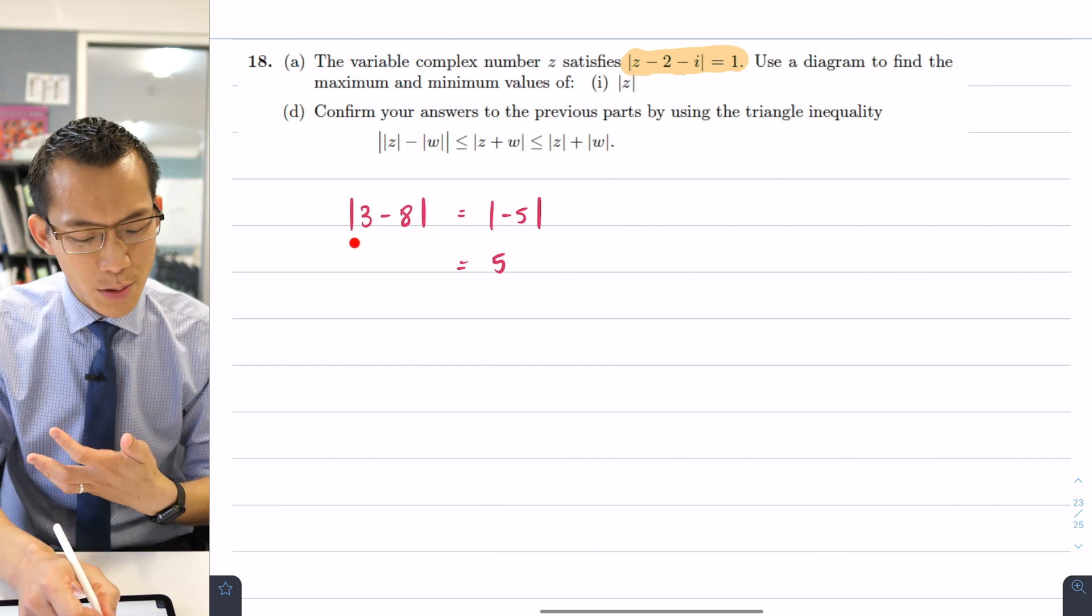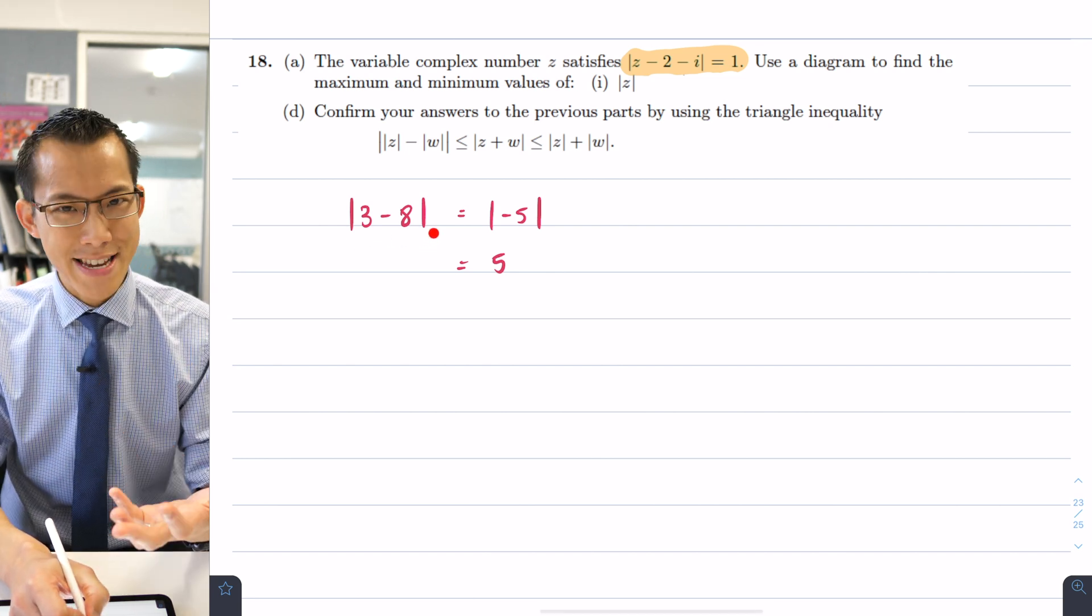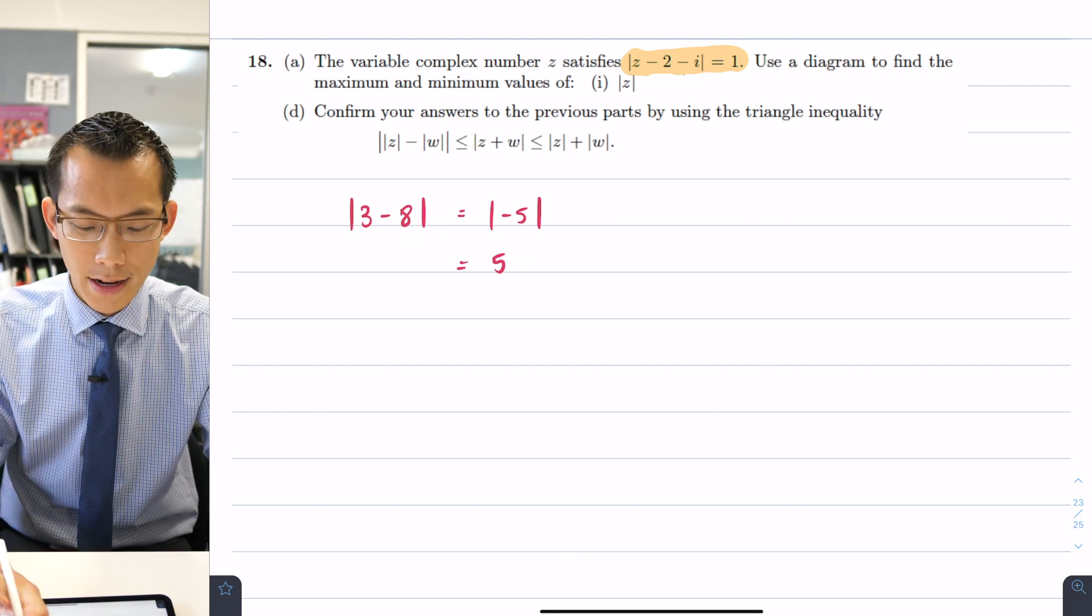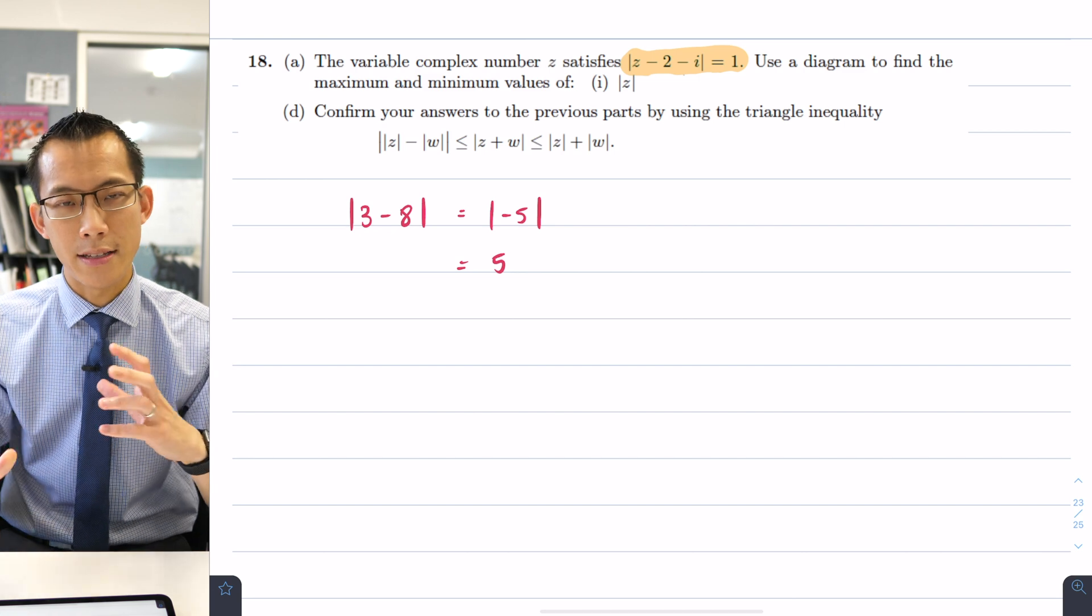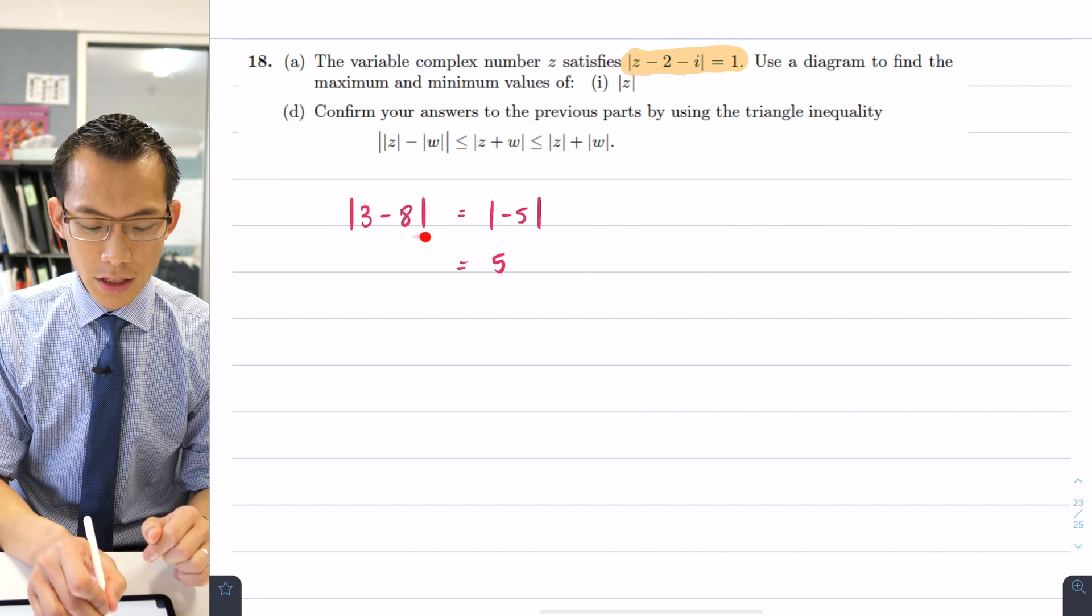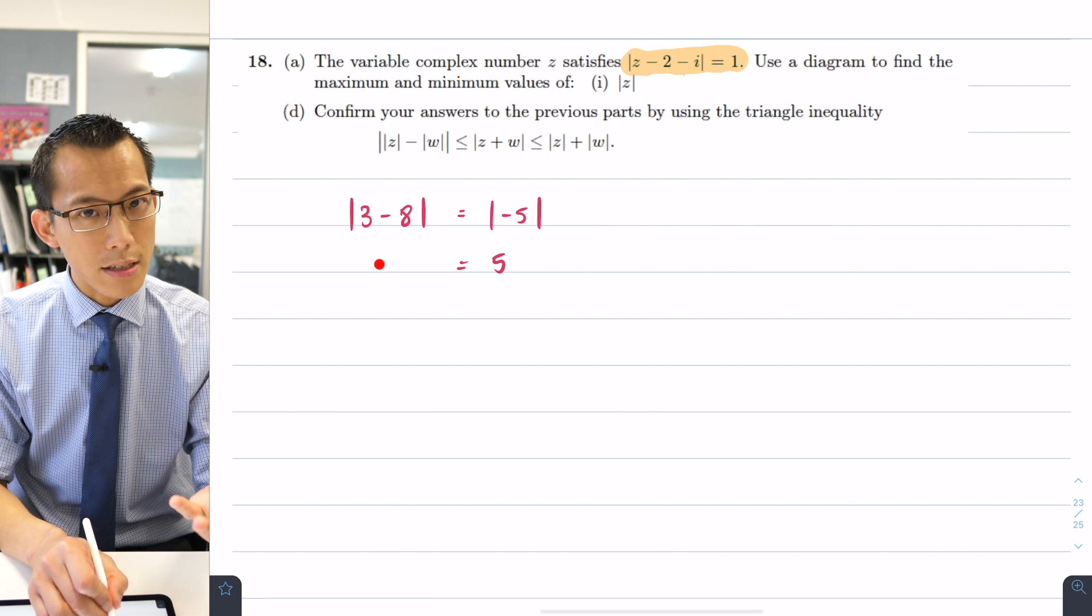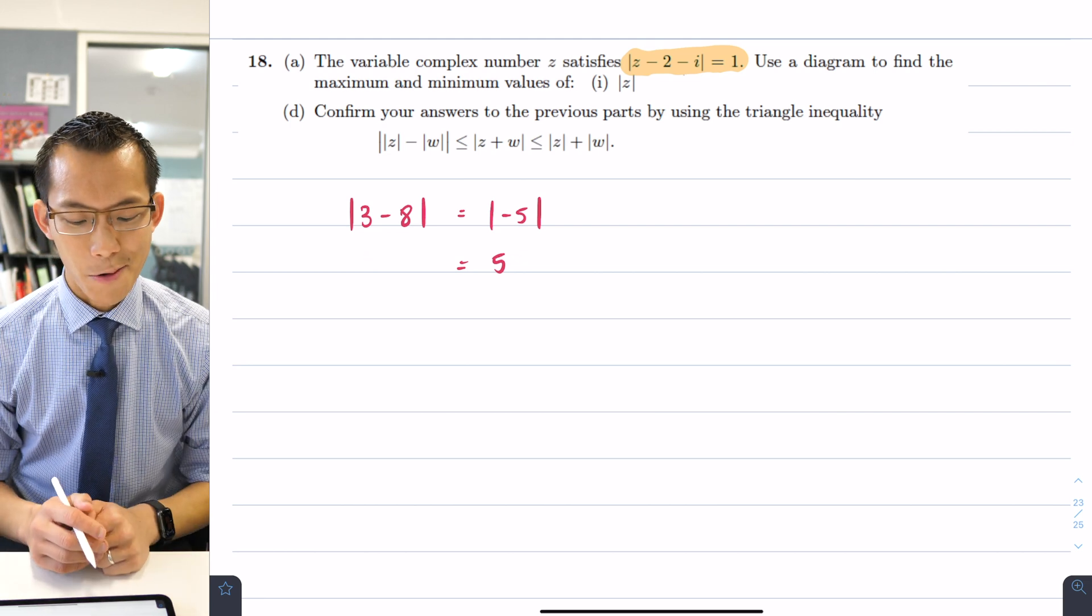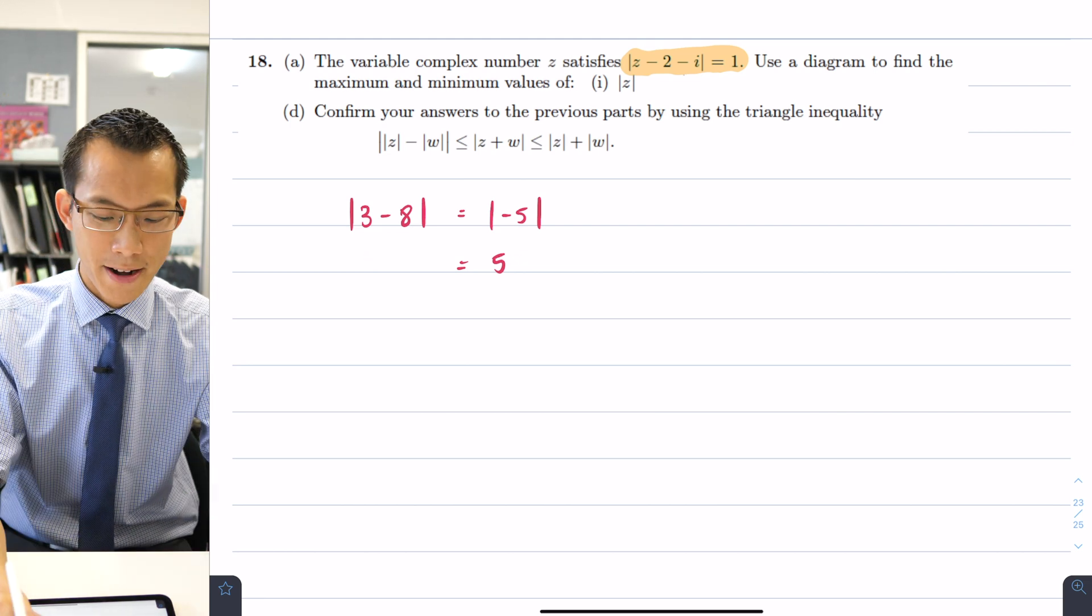So what does the absolute value of 3 minus 8 mean in geometric terms? Well it's really about distance. This idea of the modulus we connect it to distance in complex numbers but it's also connected to distance with real numbers. What this means is what's the distance from 3 to 8 or from 8 to 3 it doesn't matter which way you go which is why you can just switch the order and the absolute value doesn't matter.